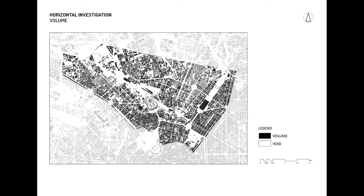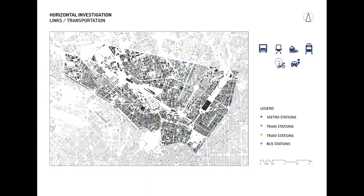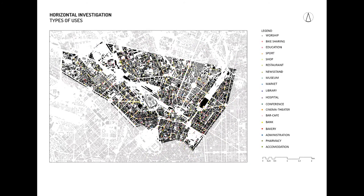Volume includes all kinds of built mass and gives the general idea of the morphology. In the local area, there is a big volume which is the abandoned storage building. Void refers to all the streets, gardens, courtyards, and so on — the local area is kind of a huge void in the current situation. The next subsystem is links or transportation; in the case, all possible public transportation in Milan are existing: train, metro, bus, trolley bus, and tram. The last subsystem is functions — types of uses — where not only the main function of the building is considered, but also the different functions at the ground floor level are important.